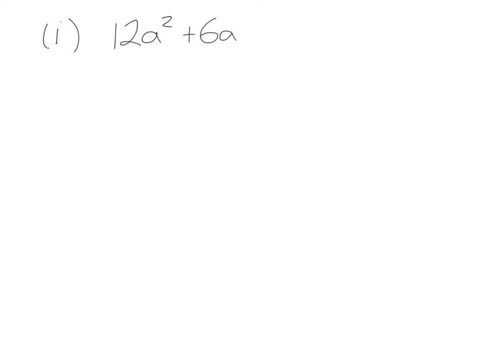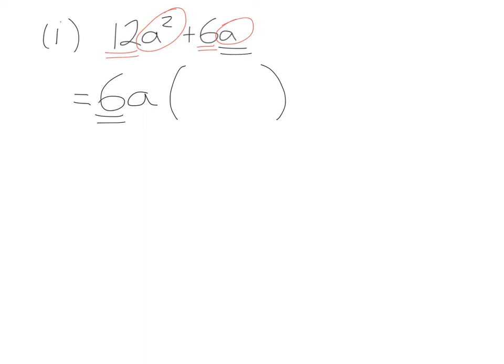This next question is a little bit trickier because this time we have numbers and letters that are in common between the two terms. We start with the numbers: what's the highest common factor that divides into 12 and 6? That's 6. Then we look at the letters — we have an a² and an a. The highest value of a that's in common between those two terms is just a by itself, because this term doesn't have a². So outside the bracket we have 6a, and inside: 6 multiplied by what gives me 12? That's 2. And a multiplied by what gives me a²? That's a.